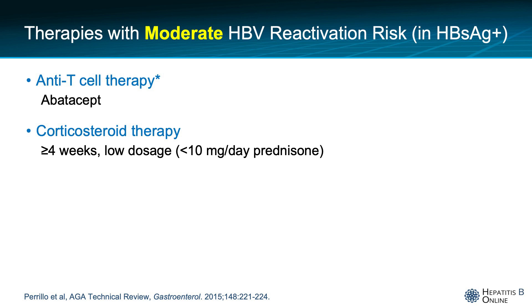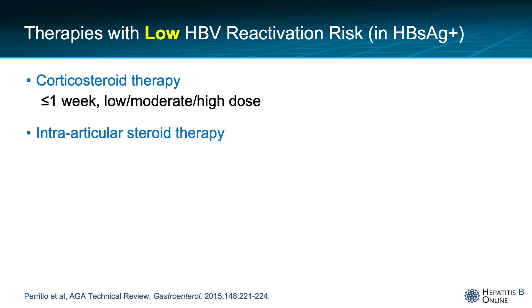Therapies with moderate risk for HPV reactivation include anti-T-cell therapy, specifically abatacept, which is used to treat rheumatoid arthritis, and longer-term steroids that meet the four-week duration threshold but are not quite 10 milligrams daily of prednisone or its equivalent. Low-risk agents include short-term corticosteroid therapy of a week or less, as well as intra-articular steroid therapy.